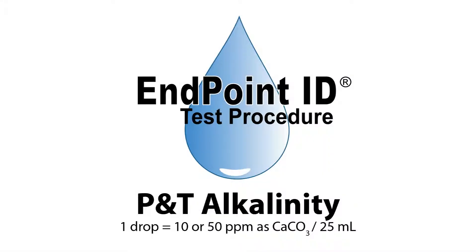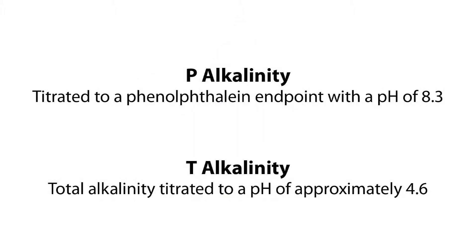This is a demonstration of a P and T alkalinity drop count test kit using endpoint ID procedures. P alkalinity is the alkalinity titrated to a phenolphthalein endpoint with a pH of 8.3. T alkalinity is for total alkalinity, which is titrated to a pH of approximately 4.6.